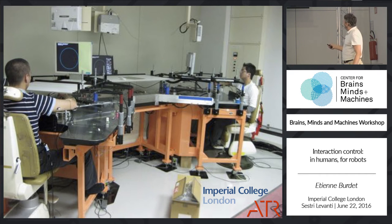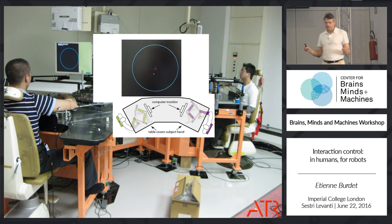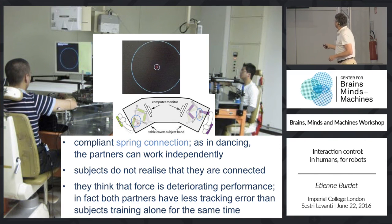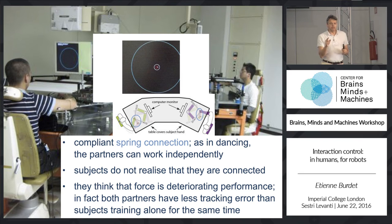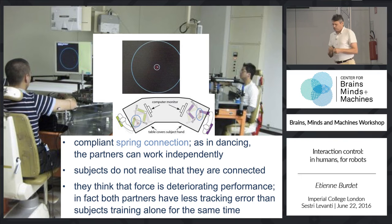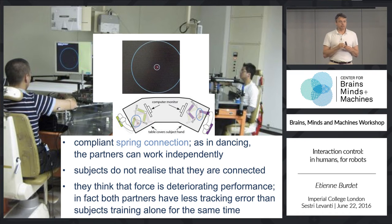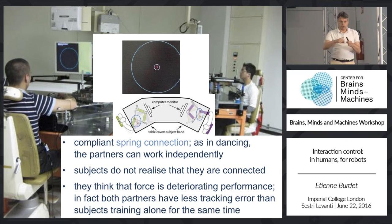This is one setup we used: two people are in the same room tracking the same target — a simple tracking task — but they don't know they are tracking the same target. They are connected by a spring — a weak spring — so they get information from the other person, but the other does not constrain their movement. When we asked approximately 100 subjects afterward what happened, basically they had no idea. Only 20% found out they were connected with a partner.